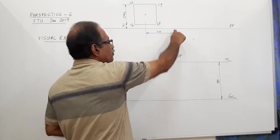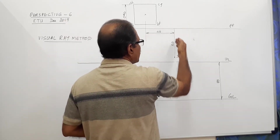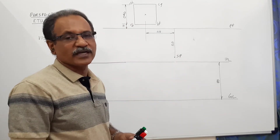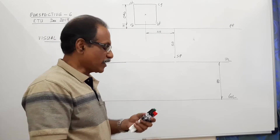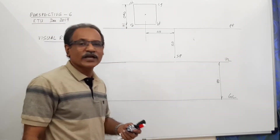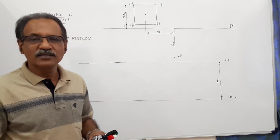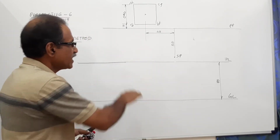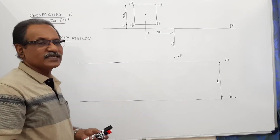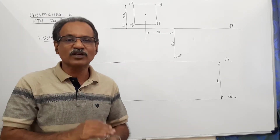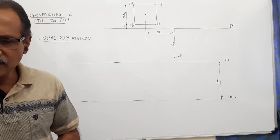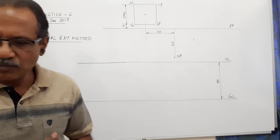The station point SP is 55mm from PP. Draw the horizon line HL anywhere, preferably below SP. Then draw GL 80mm below HL, because the station point is 80mm above the ground.